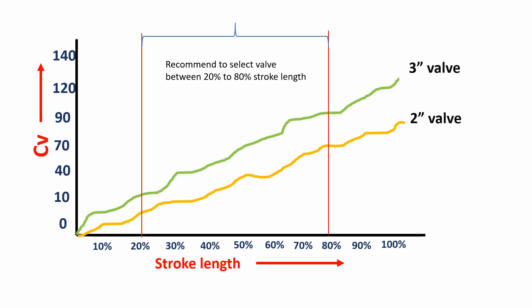So this is basically a hard and fast rule. Normally these manufacturers will recommend to select a valve that falls between 20 to 80 percentage of the stroke length for getting a good operating result.